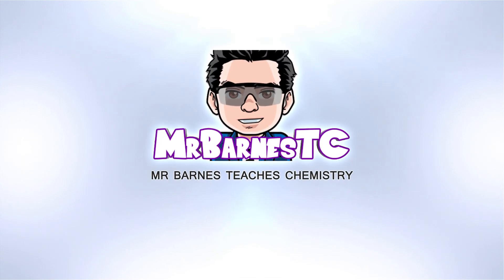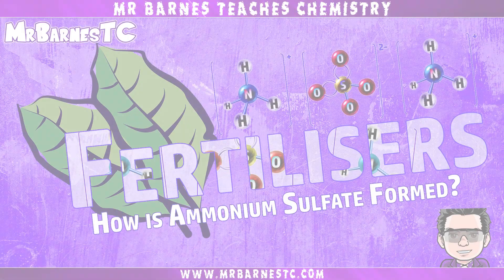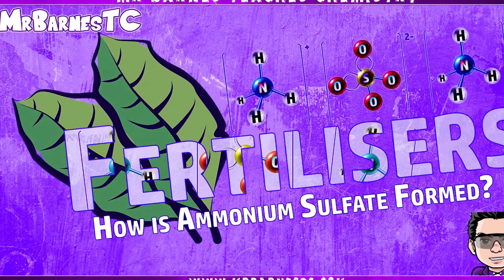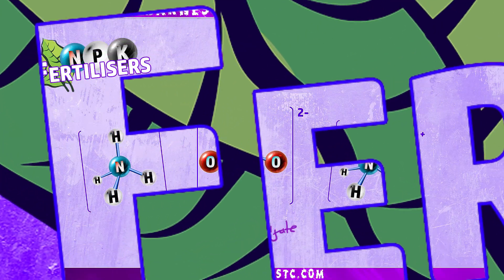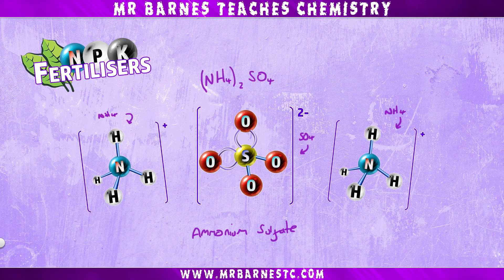Hi guys, welcome to this video looking at how you can make ammonium sulfate in the lab and in industry. Hopefully you can remember that ammonium sulfate has the formula (NH4)2SO4, but the question is how is it produced?